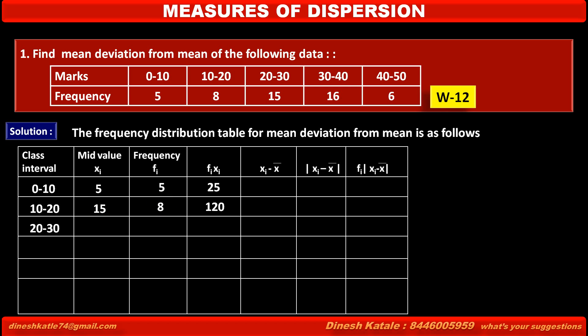The third class interval is 20 to 30. So its mid-value is (20 + 30) / 2 = 50 / 2 = 25. Its given frequency is 15. So the product fi·xi is 25 × 15 = 375.